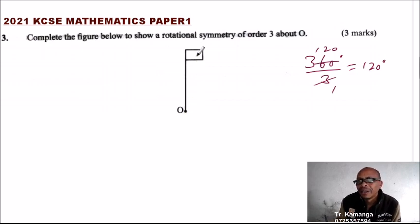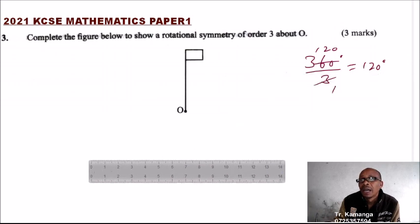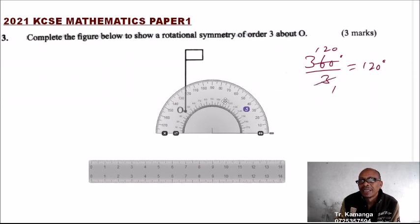What you need to do is rotate this through an angle of 120 to get the image, and again 120 degrees to be able to get the other image.